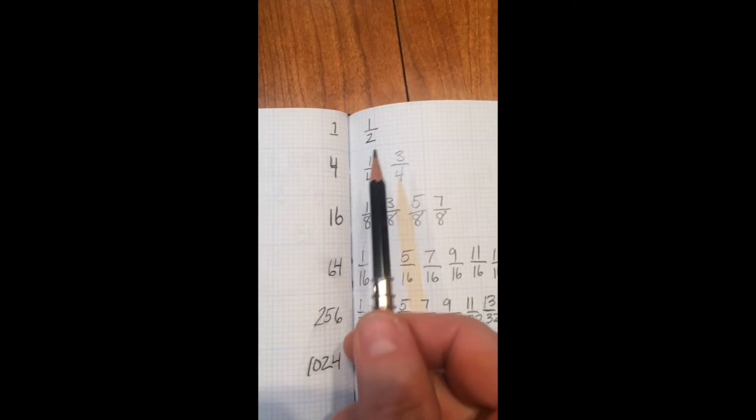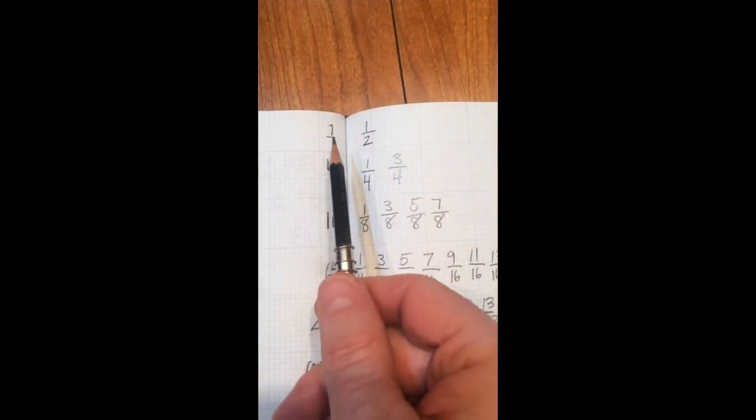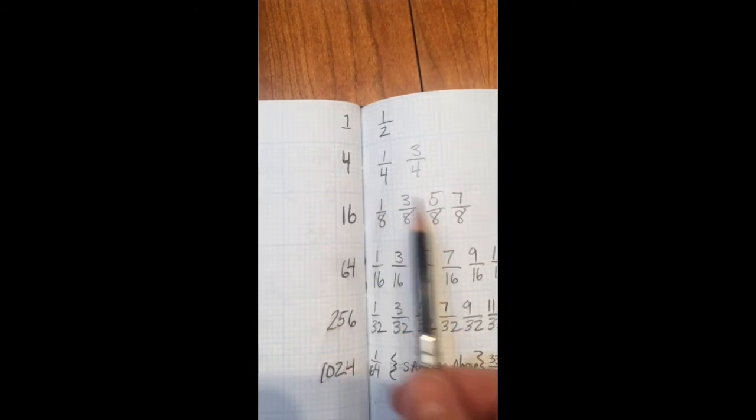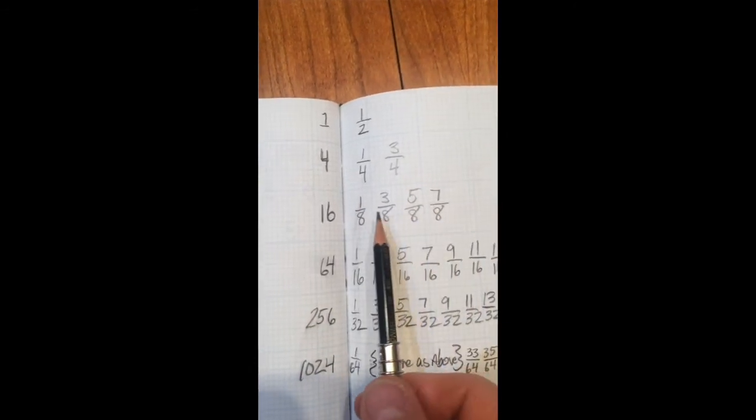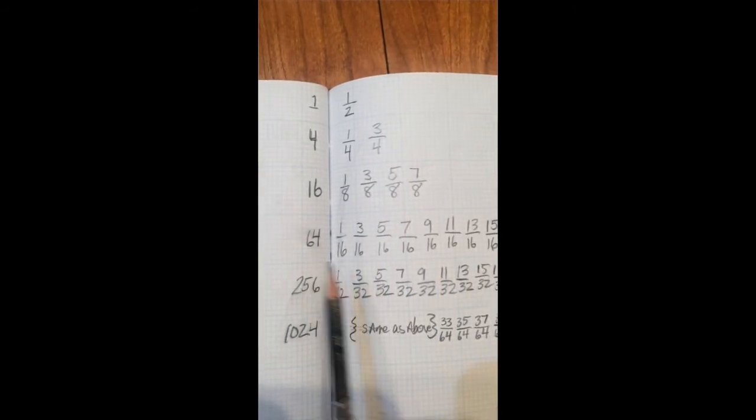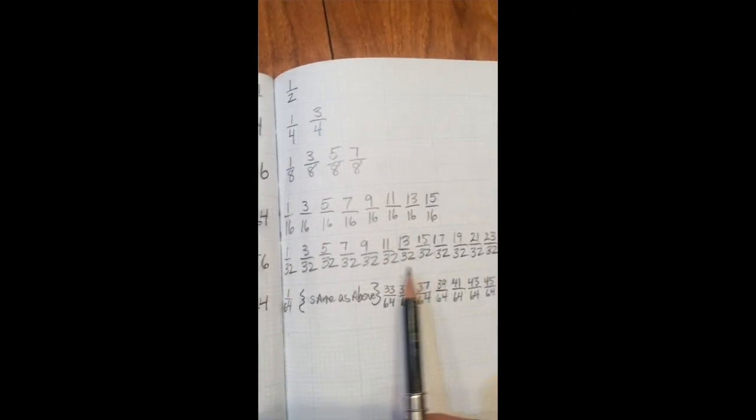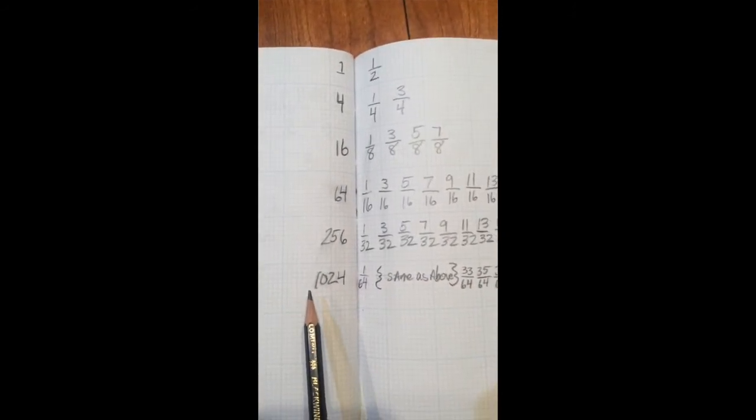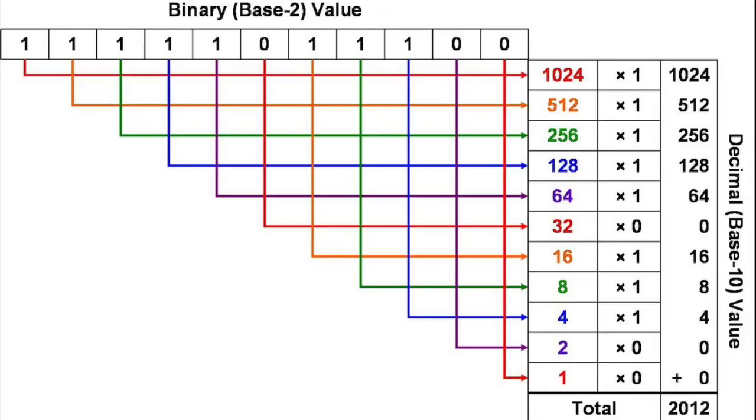Summing up the numerators also has a pretty cool pattern. On the half row you've only got one. On the quarter row you've got four. On the eighth row you got 16. On the 16th row you have 64. On the 32nd row everything adds up to 256. And on the 64 row everything adds up to 1024. Pretty cool, huh? That reminds me of bit counting and computing.